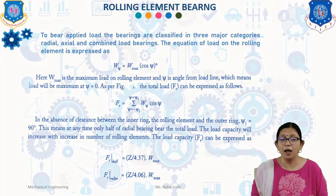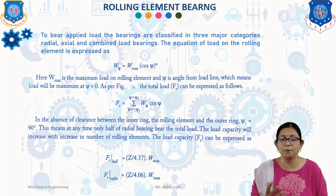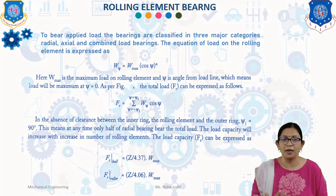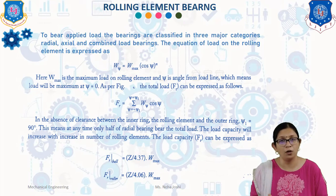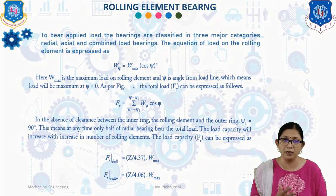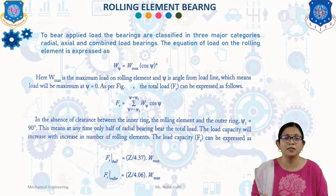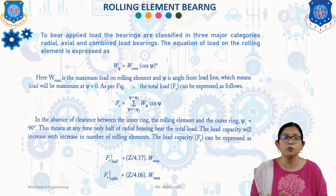Similarly, for roller, it is given by the equation F_r = Z / 4.06 × W_max. Here Z is the number of rollers or balls. According to these equations, for a given load capacity F_r, increasing the number of rolling elements decreases the maximum load. The value of maximum load can be utilized to find the minimum film thickness under elastohydrodynamic lubrication mechanism.